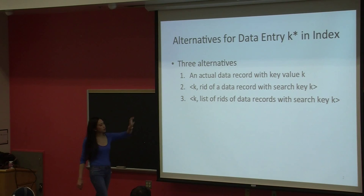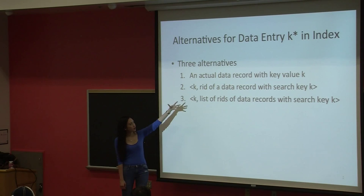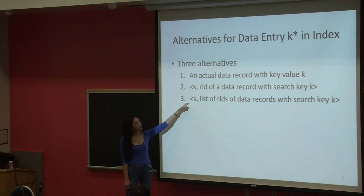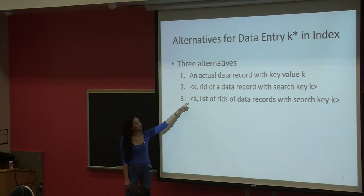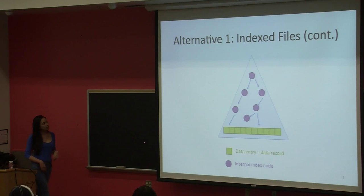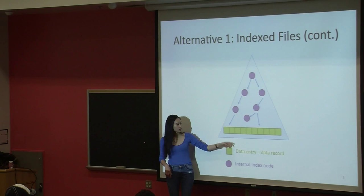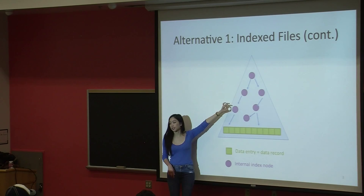The second alternative is K along with the RID — RID is the record ID — so it's one K, one RID. The third one is a little bit different: we have a pair of K and then a list of RIDs. Last time we also showed a pictorial representation of that. In alternative one, the data entry itself is actually the data record — the data actually sits there — and the nodes are the internal index nodes.